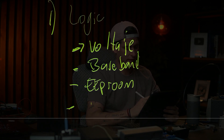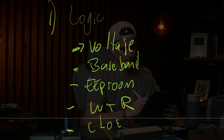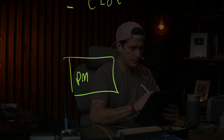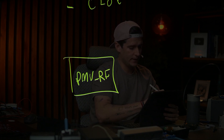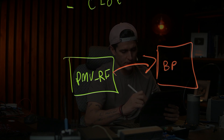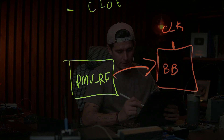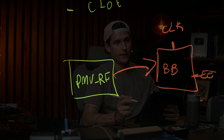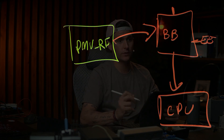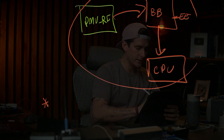We also have the WTR and some clocks. We have the PMURF that is going to send power to our baseband. The baseband needs to have clocks, the baseband needs to have the EEPROM, and the baseband needs to talk with the CPU. If we have all this working, when we dial the code we are going to get the serial number.